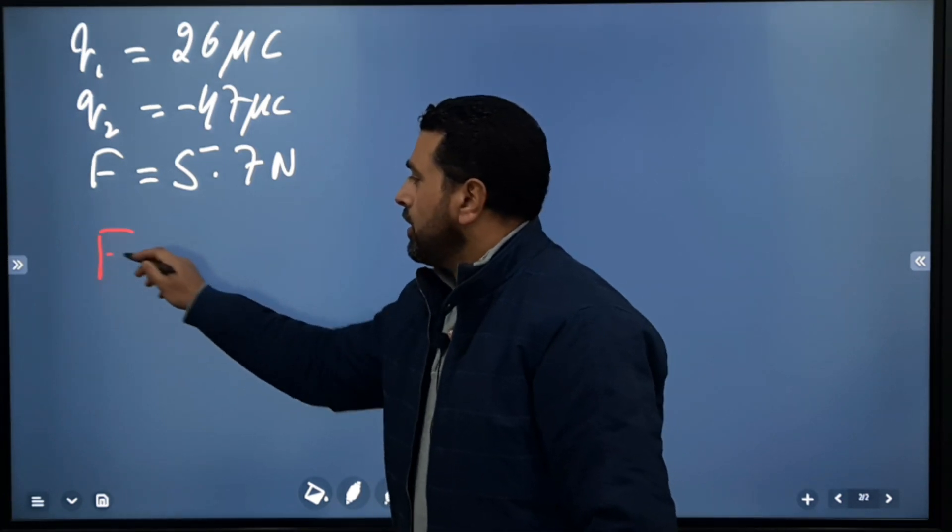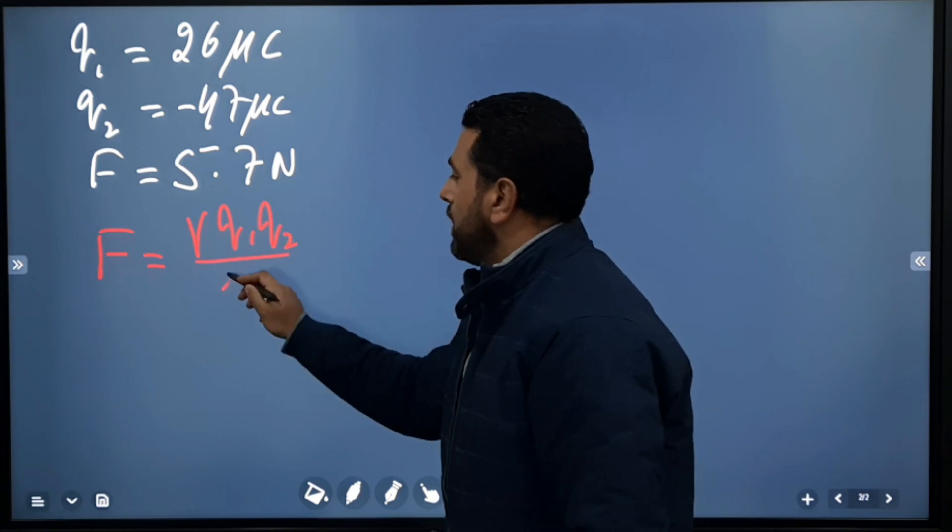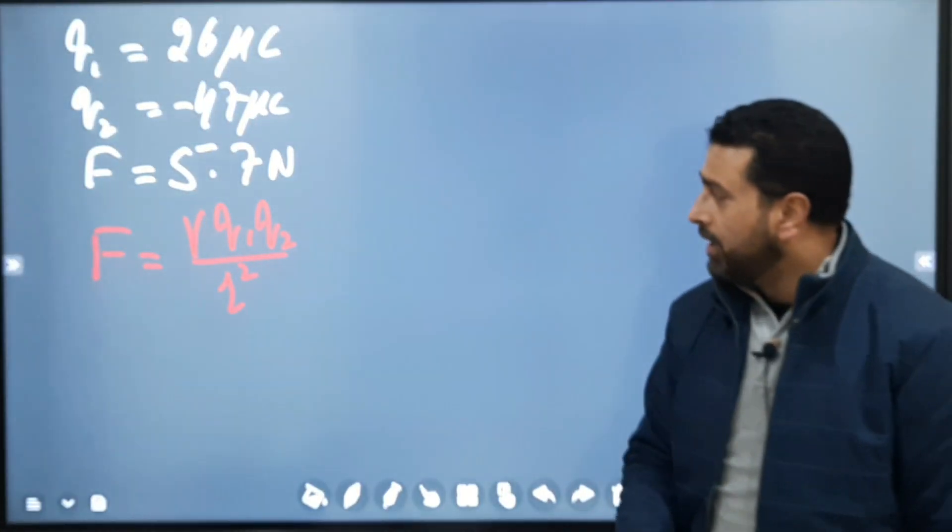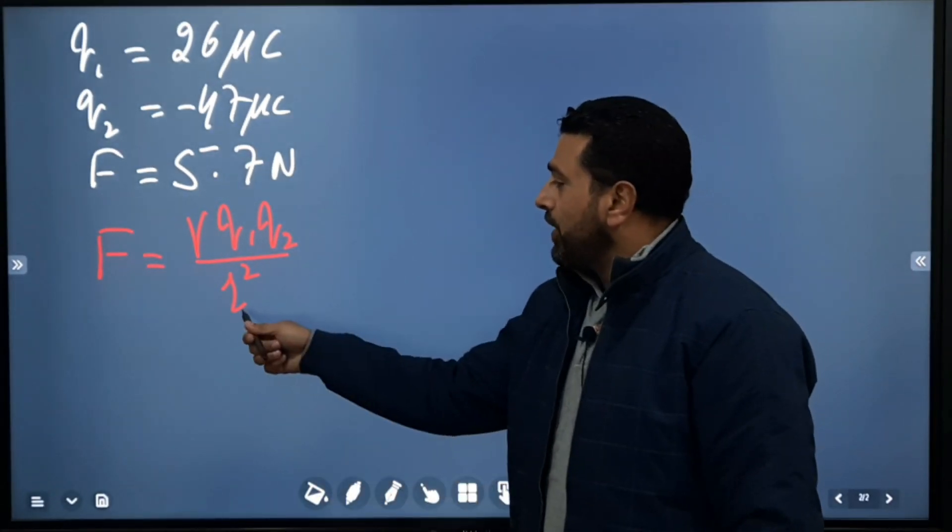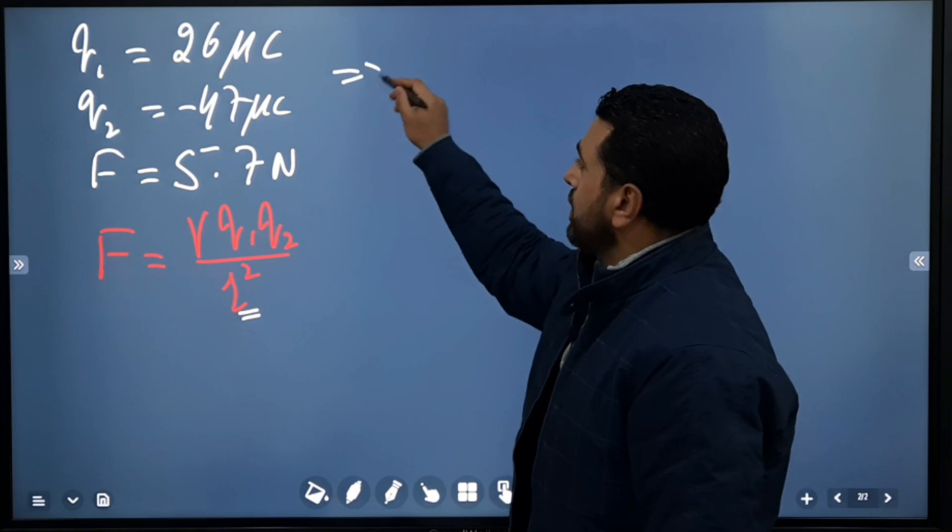I'm using gamma for the electrostatic constant. q1 and q2 are given; we have to find r. So we can rearrange this equation and I'll take this r upstairs.